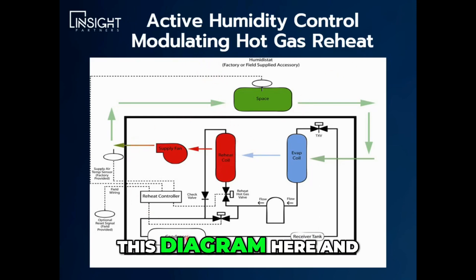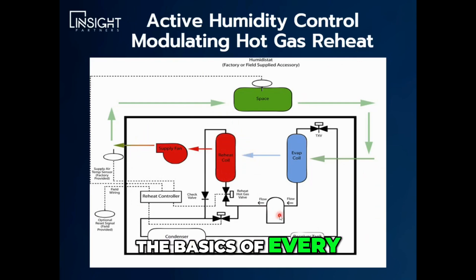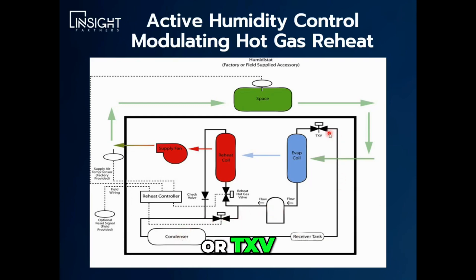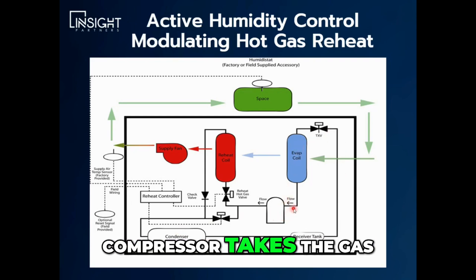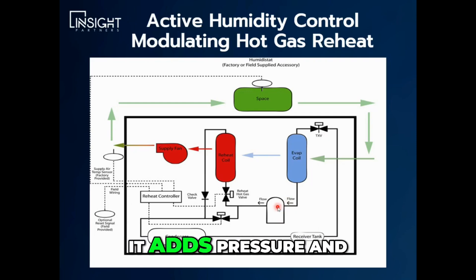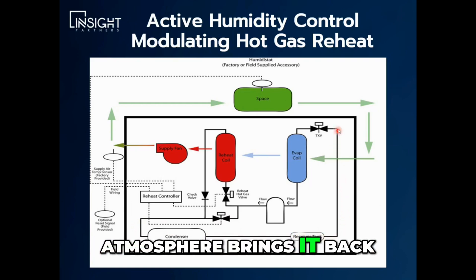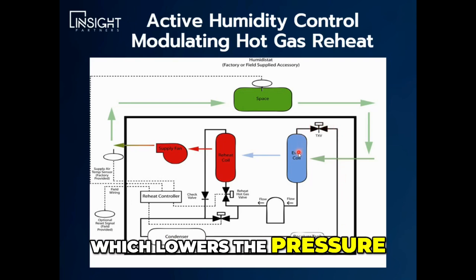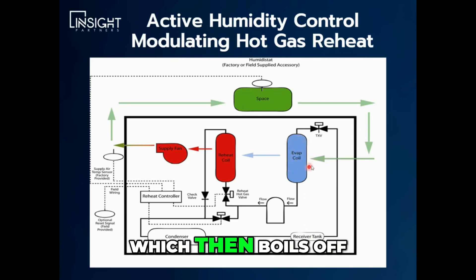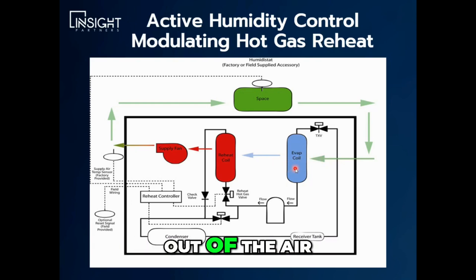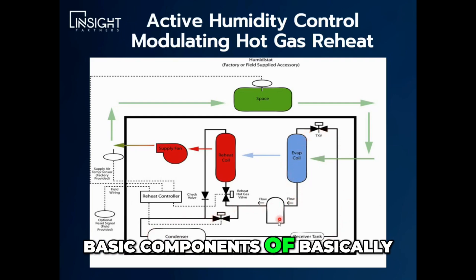So this is modulating hot gas reheat. If you take this diagram here and remove the reheat coil, what you have is the basics of every HVAC refrigeration system: a compressor, condenser, your thermal expansion device or TXV, and evaporator coil. What happens is your compressor takes the gas from the evaporator, adds pressure and temperature to the gas, sends it over to the condenser coil, which then rejects much of the heat to the relatively cool atmosphere, brings it back around to the thermal expansion device, which lowers the pressure, and sends this liquid to the evaporator coil, which then boils off from the heat from the air going across it. So that takes the heat out of the air, puts it in the refrigerant, turns it into a gas, sends it back to the compressor. So that's your four basic components of basically every refrigeration cycle.